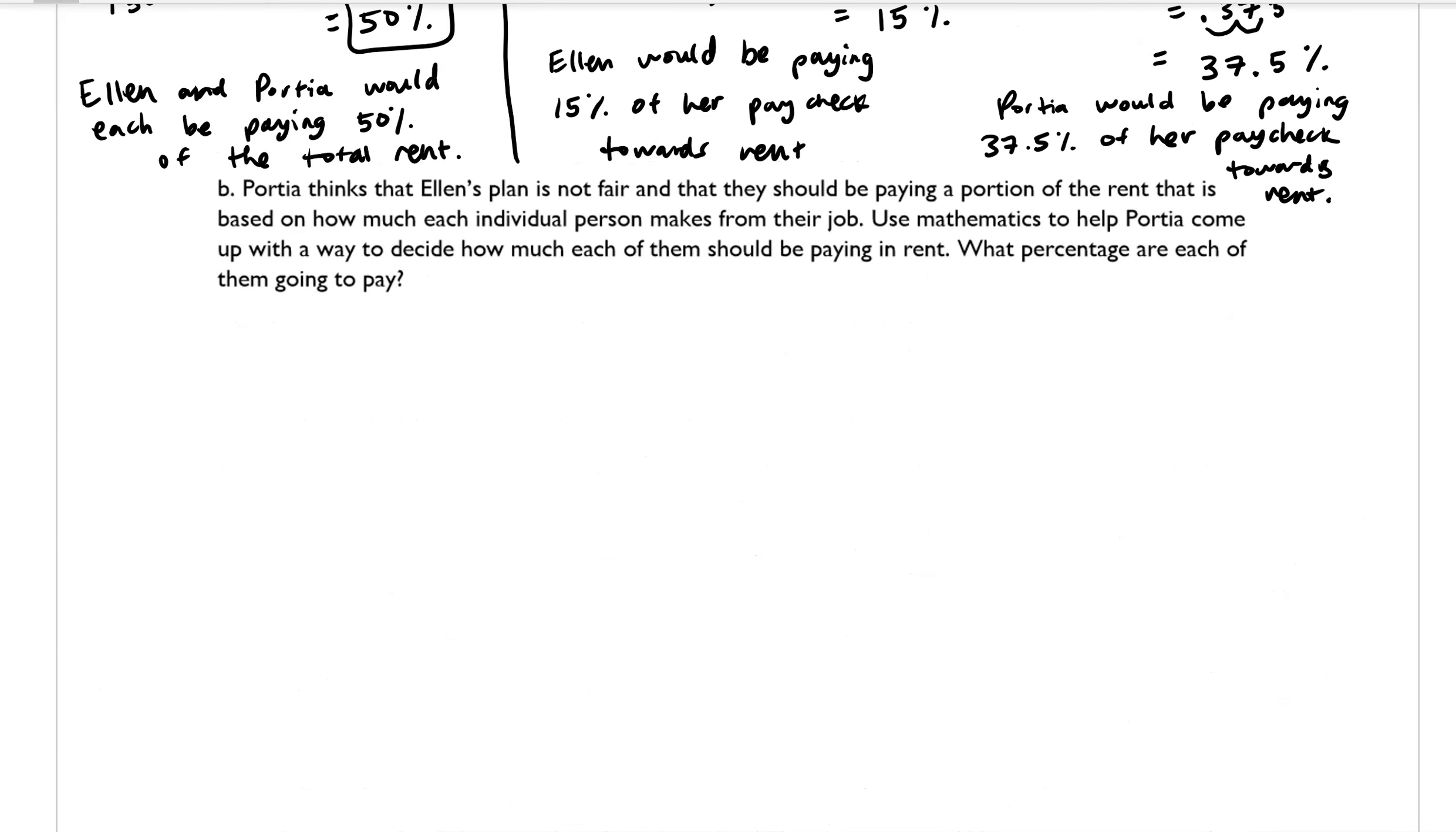Part B says, Portia thinks that Ellen's plan is not fair and that they should be paying a portion of the rent that is based on how much each individual person makes from their job. Use mathematics to help Portia come up with a way to decide how much each of them should be paying in rent. What percentage are each of them going to pay?